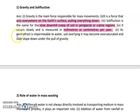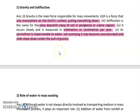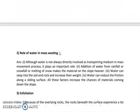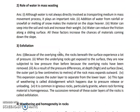Permafrost is very impermeable to water. The soil overlying it may become oversaturated and slightly slope down under the pull of gravity. The next short note is on the role of water in mass wasting.